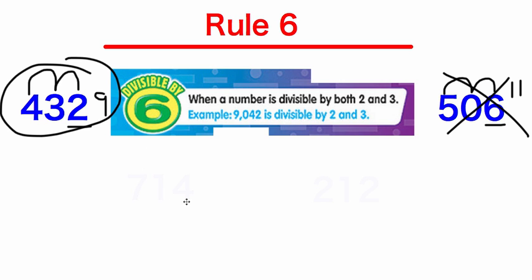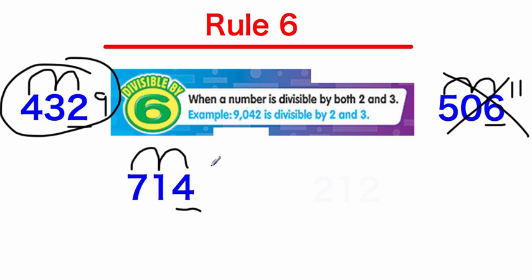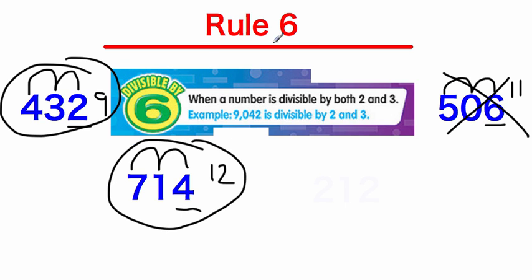Let's check another example: 714. Is 714 divisible by 2? Yes, it ends in an even number. What about for 3? 7 plus 1 is 8, plus 4 is 12. Can 3 evenly go into 12? Yes, it can. So since 714 is divisible by both 2 and 3, it is divisible by 6.